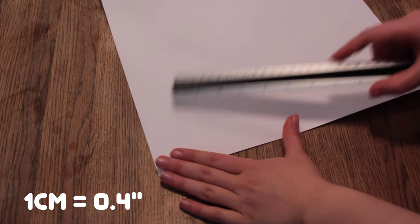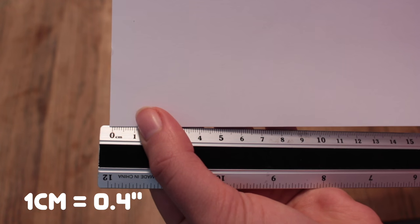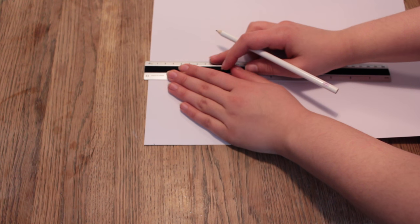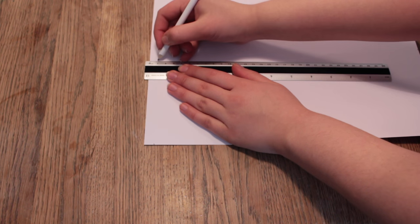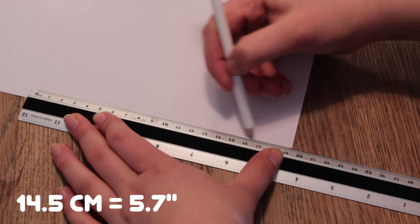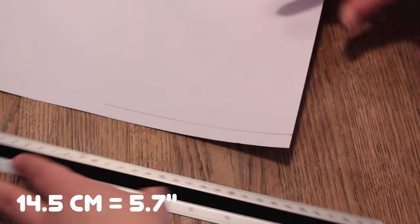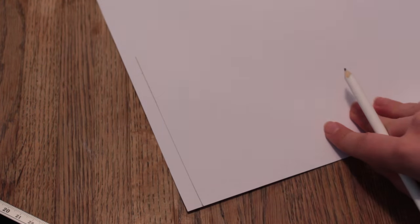Then take your white construction paper and measure inwards one centimeter, then make your mark and draw a line that's at the same height as your card, which in my case is 14 and a half centimeters. Place your card at the line you just made and then draw around the card.